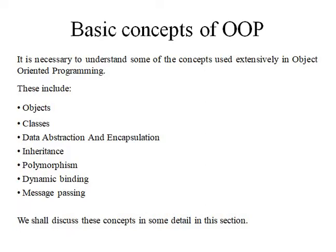These are the basic concepts of object oriented programming: object, classes, data abstraction and encapsulation, inheritance, polymorphism, dynamic binding and message passing. We have already discussed these basic concepts of object oriented programming.